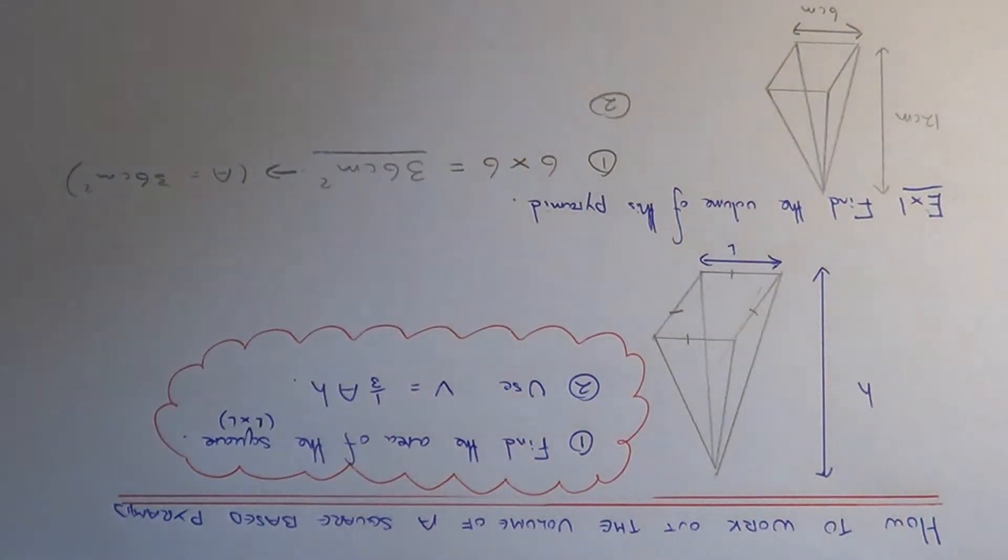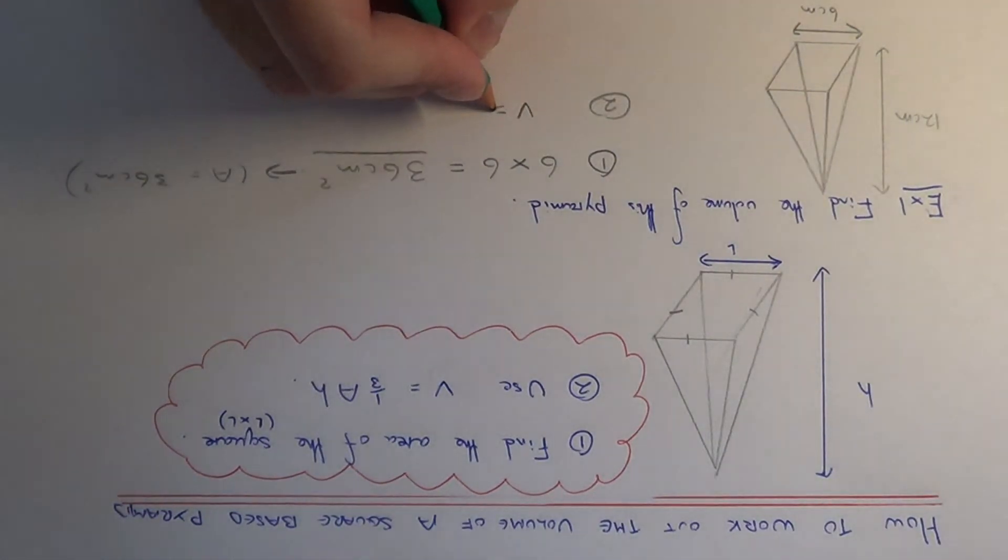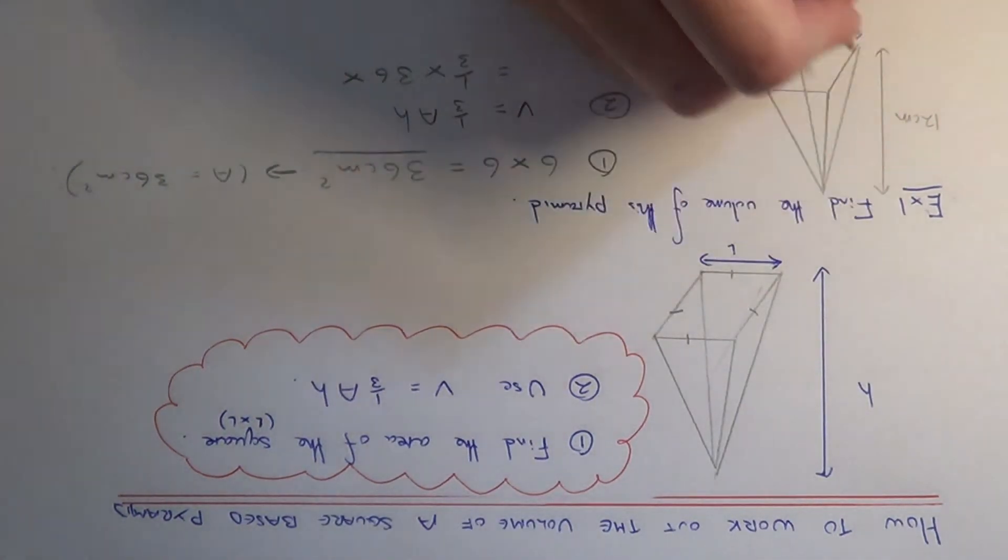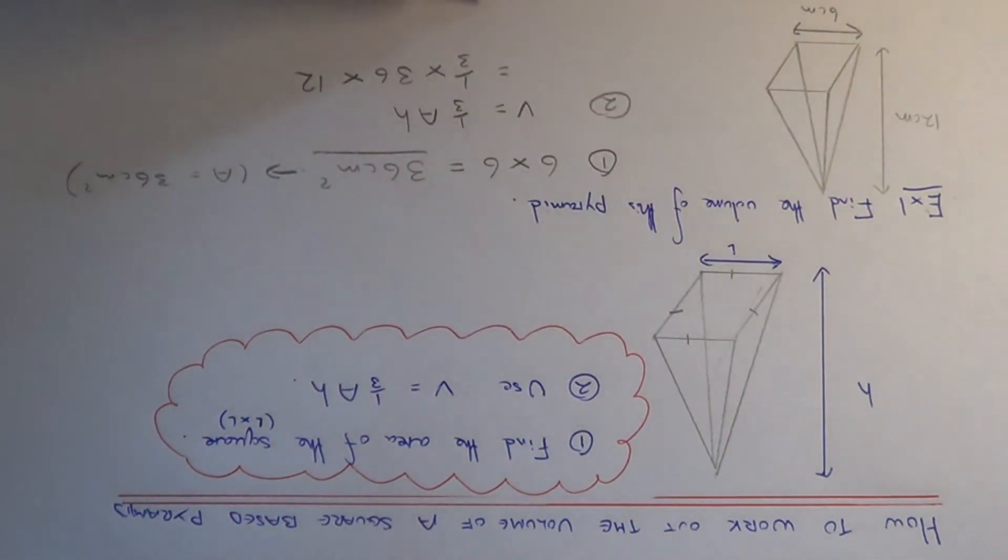Now we need to work out the volume. To get the volume, we do one third times the base area multiplied by the height. So we do one third multiplied by the base area, which is 36 cm squared, then times this by the vertical height, which is 12 cm.